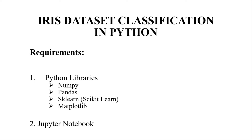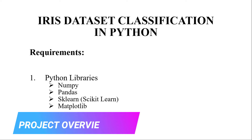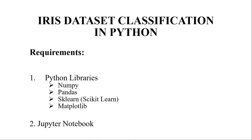Hello everyone, welcome to our YouTube channel 'My Project Ideas'. In this video, we'll be discussing a Python-based machine learning model to predict the species of an iris flower. To build this model we require Python libraries — numpy, pandas, matplotlib, and sklearn — installed on your system, along with Jupyter Notebook or any other Python IDE used to build machine learning models.